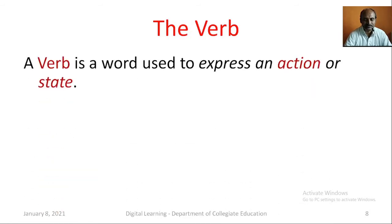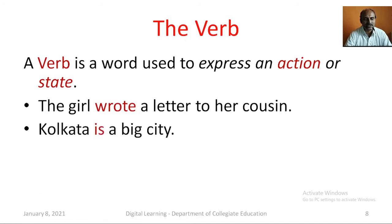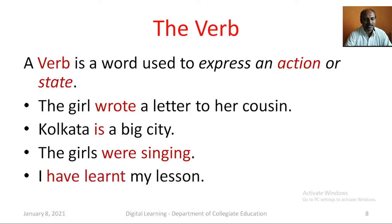The Verb. A verb is a word used to express an action or state. For example: The girl wrote a letter to her cousin. Kolkata is a big city. The girls were singing. I have learned my lesson. Here, wrote, is, were singing, have learned — all these are verbs. Wrote and learned indicate action, and is and were indicate the state of the noun.